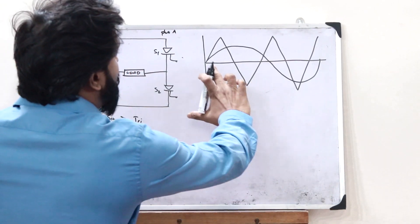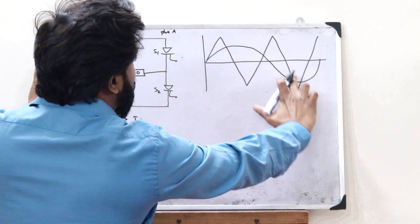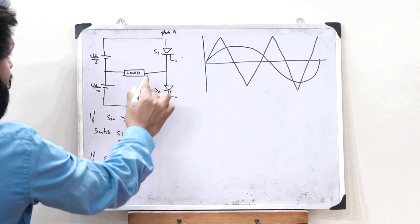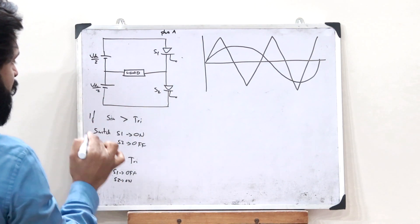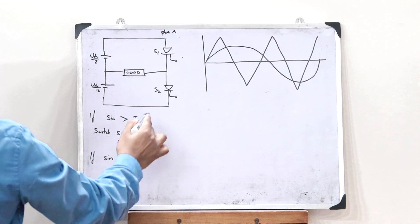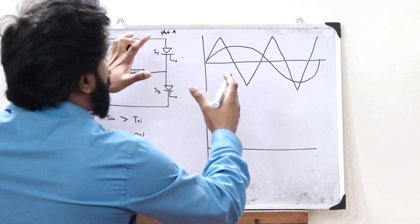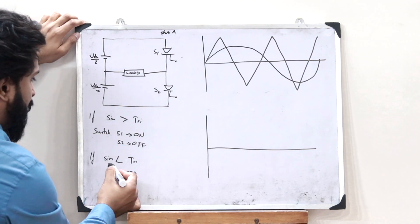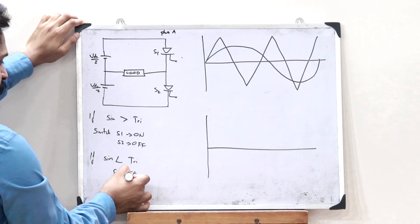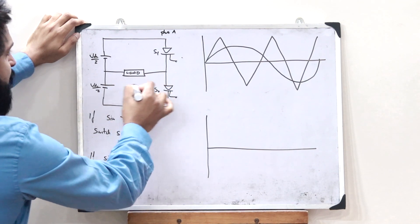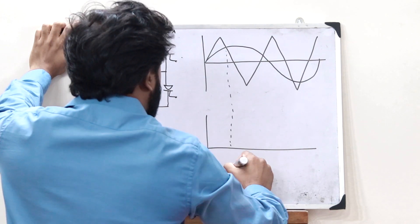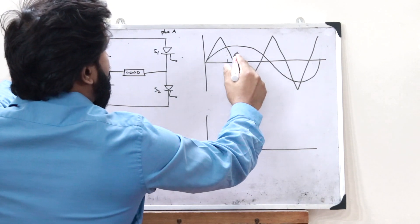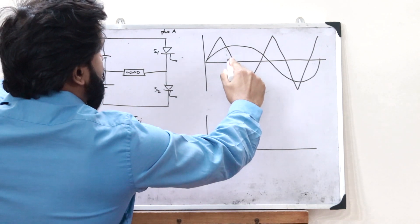Let us now compare a sine wave and a triangular wave. According to our condition: if the sine wave is greater than the triangular wave, S1 is on and we get plus VDC/2; if sine wave is less than the triangular wave, S2 is on and we get minus VDC/2. In this first region, the sine wave is less than the triangular wave, so S1 is off and S2 is on — we get minus VDC/2.